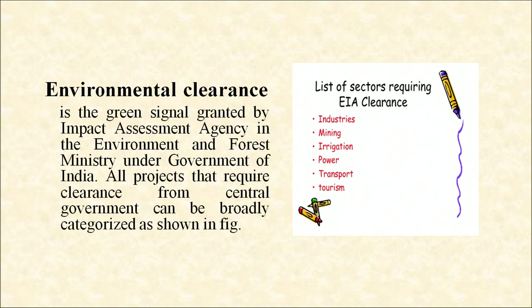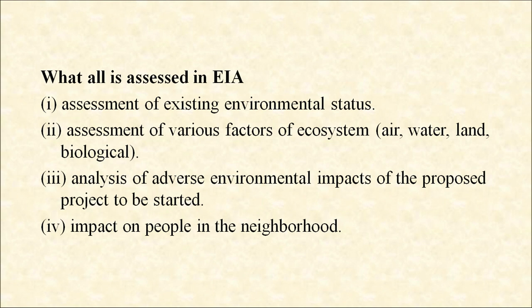Now, environmental clearance — it is a green signal granted by the Impact Assessment Agency in the Environment and Forest Ministry under the Government of India. All projects that require clearance from the central government can be broadly categorized as: river valley projects, nuclear power projects, infrastructure and CRZ, mining, thermal power plants, tourism, transport, and irrigation projects. What is assessed in EIA includes: assessment of existing environmental status, assessment of various factors of the ecosystem, analysis of adverse environmental impact of the proposed project, and impact on people in the neighborhood.